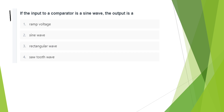First question: If the input to the comparator is a sine wave, what is the output? In a comparator, when the input is a sine wave, the output is a rectangular wave.